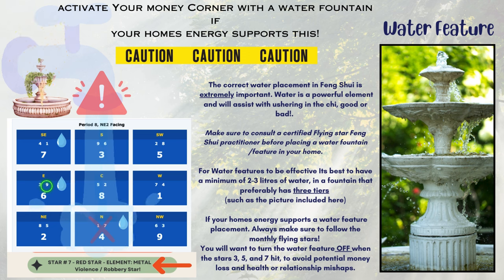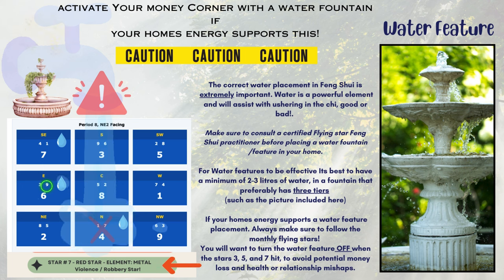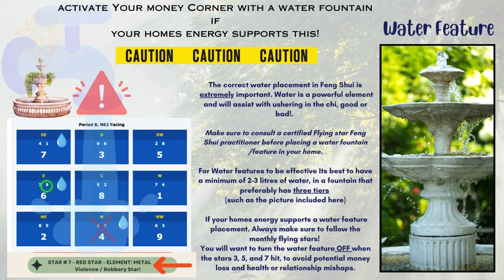I wish I could tell you all to put one in a specific sector, but you really have to look at your permanent placements and observe the annual and monthly stars — that's very important as well. Even if I do choose to put a water fountain in my east sector, I would want to turn that off when the number three, five, or seven star hits, because that's going to stir up financial issues and could also shake up some health issues and relationship mishaps. So be very cautious when putting up water features, and I would say it's worthwhile to consult a professional classical Feng Shui consultant if you're looking to do this.